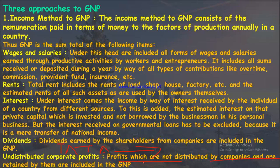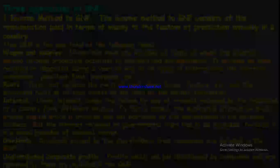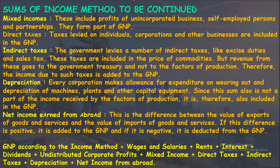The income method for GNP also includes mixed incomes: profits of unincorporated businesses, self-employed persons, and partnerships. These form part of GNP. However, unlawful income is not included in mixed income — only legal business activities are considered.